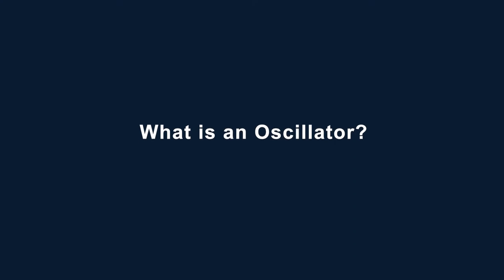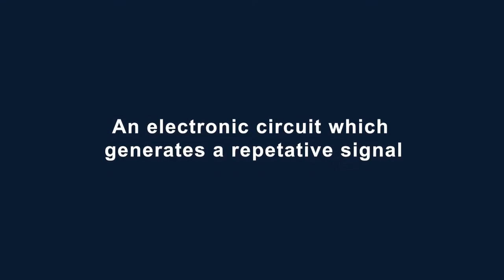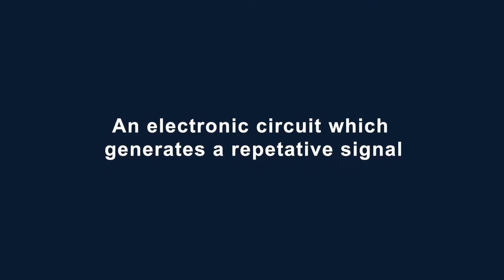But first, let us review. What is an oscillator? An oscillator is an electronic circuit which generates a repetitive signal. This signal can be in many forms depending on the application.